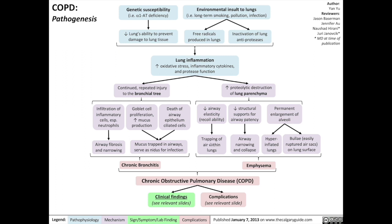This results in the trapping of air within the lungs. Simultaneously, there's less structural support for airway patency, resulting in airway narrowing and collapse. Finally, destruction of lung tissue results in the permanent enlargement of the alveoli, resulting in hyperinflated lungs and bullae, which are easily ruptured air sacs on the lung's surface. This collection of pathophysiological events collectively results in emphysema, which is a type of COPD defined in the COPD definitions and overview flowchart.